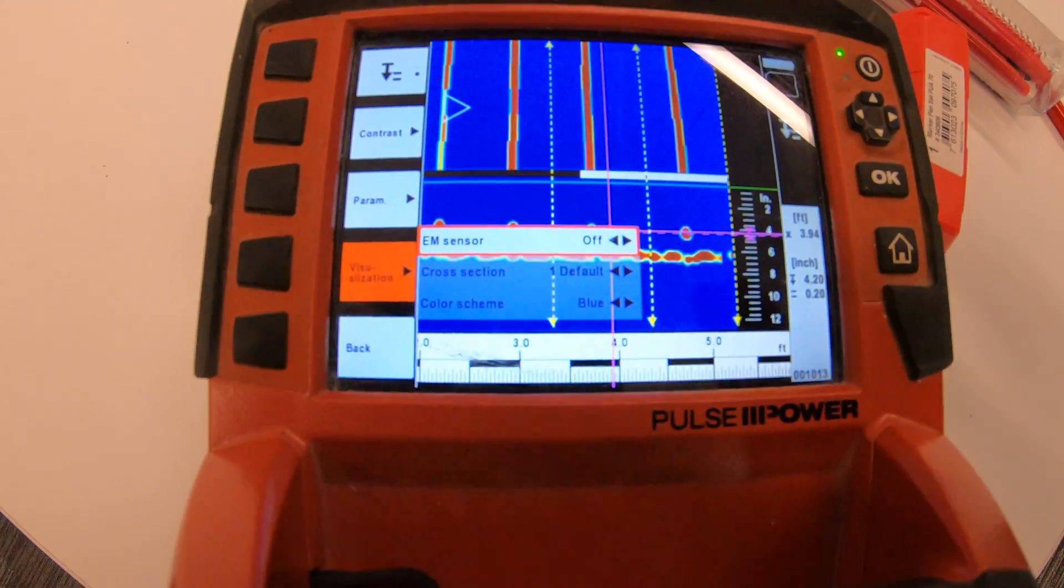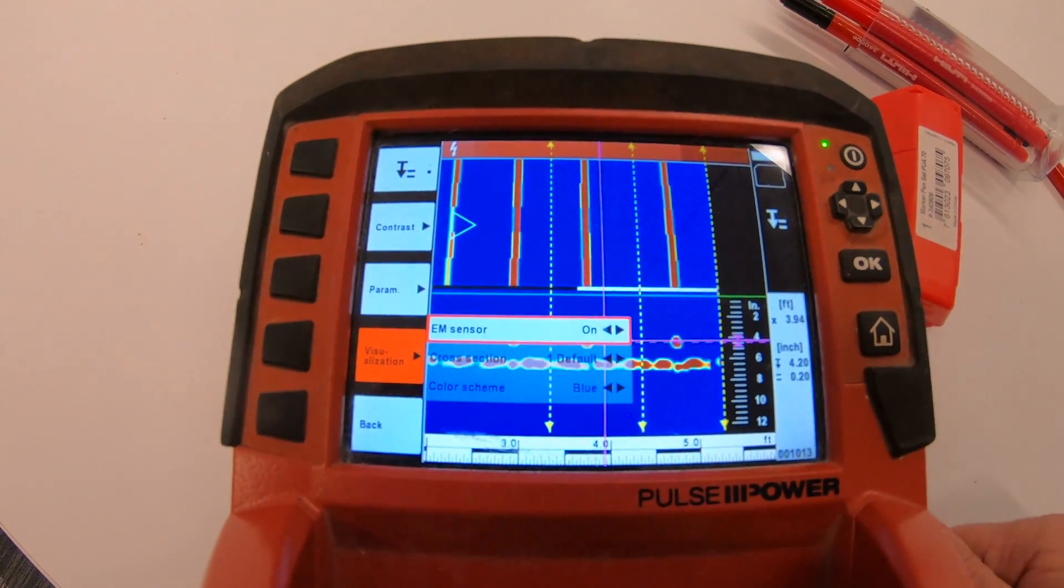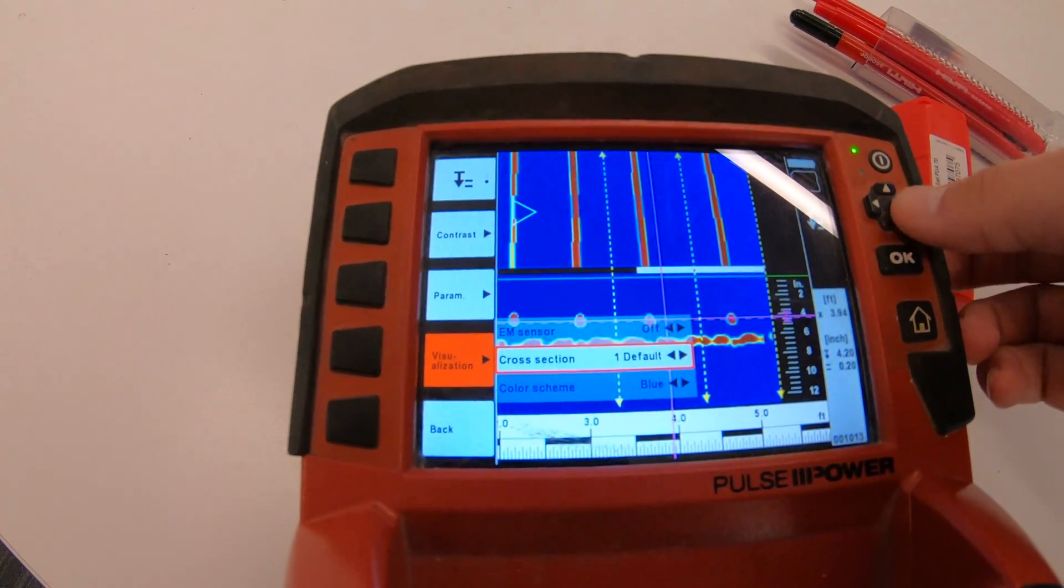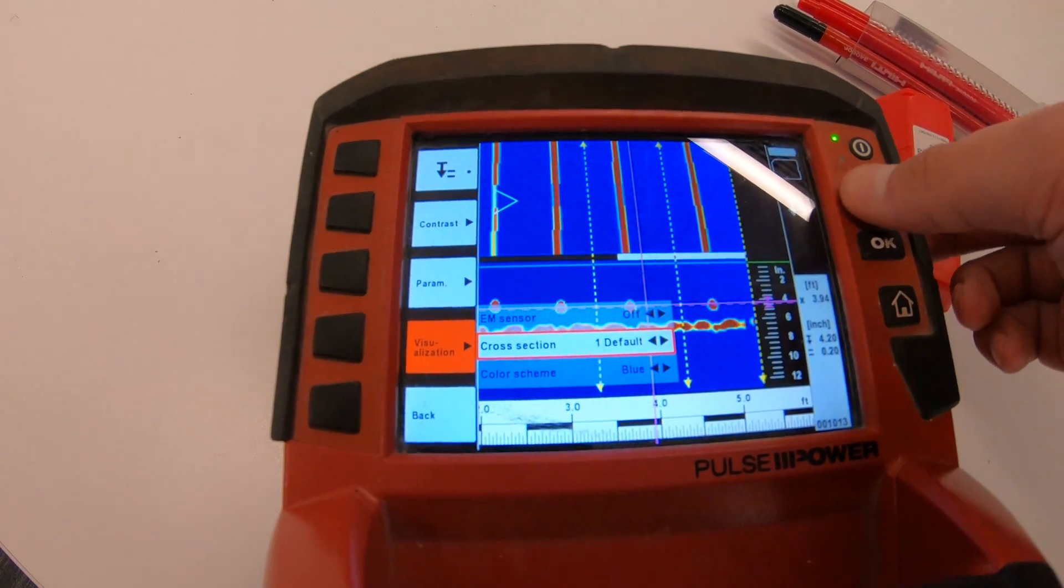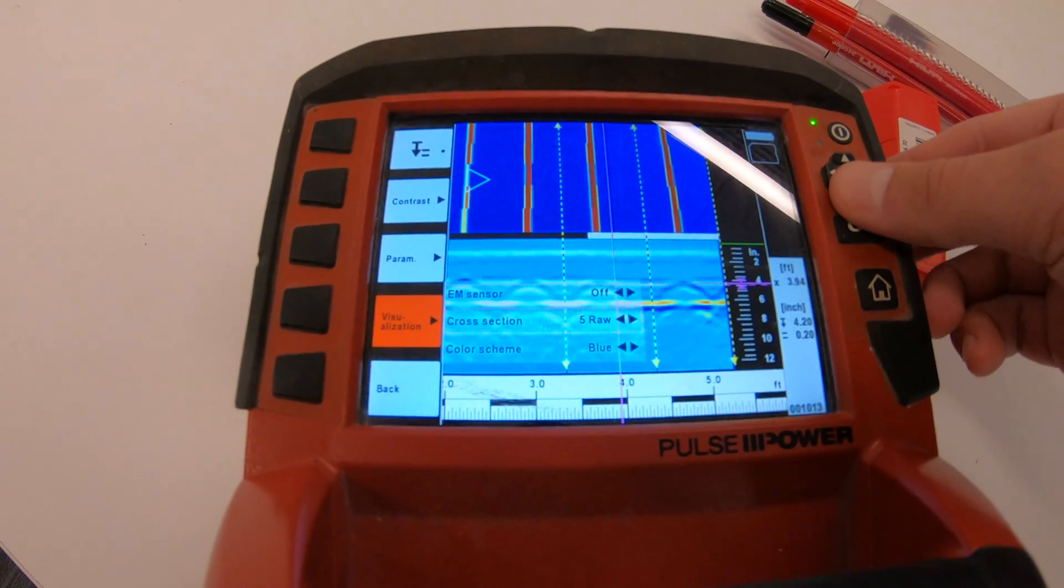And then you have your visualization where you can put your EM sensor on and bring up the EM sensor up here. And right now I'm not really seeing much activity. I can turn my cross section on and off—so I'm sorry, my cross section to default view or raw view. I can change my color scheme.